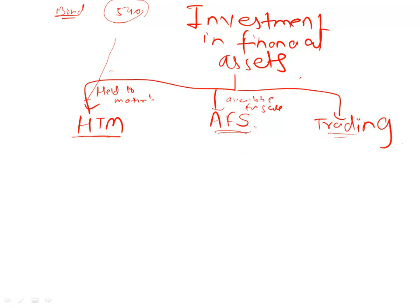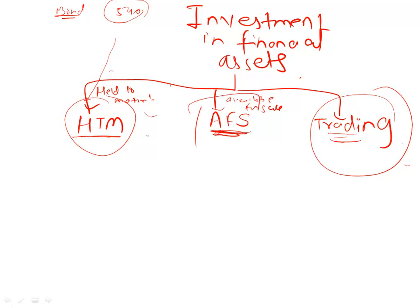If I purchase an equity security and want to hold it till maturity — well, equity has no maturity, so I cannot put it into the HTM category. Equity must be either AFS or trading. If my intention is to sell the equity immediately and make a profit, it goes into trading. Otherwise it goes into AFS, because there is no other choice. AFS means I will hold on for now and decide in future what to do, whereas trading means I want to sell immediately and make a profit. AFS securities are available for sale but will be sold when an appropriate opportunity arises.